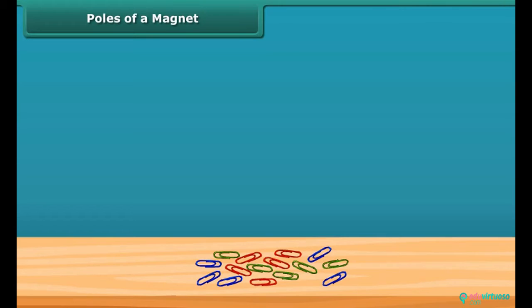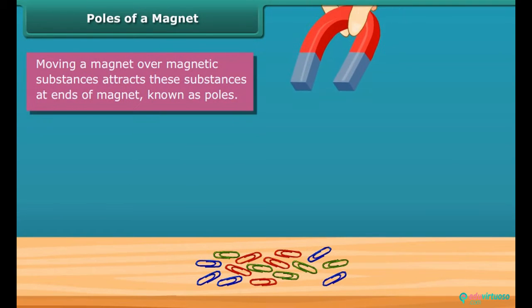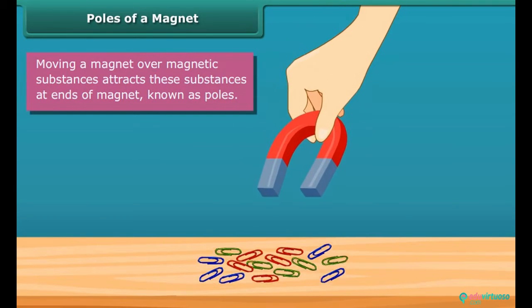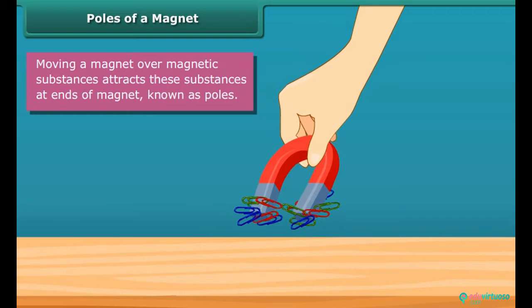Poles of a magnet. When you move a magnet over magnetic substances, you will see that these substances get attracted to particular parts of the magnet only. These are generally the two ends of the magnet, and these ends are called poles of the magnet.